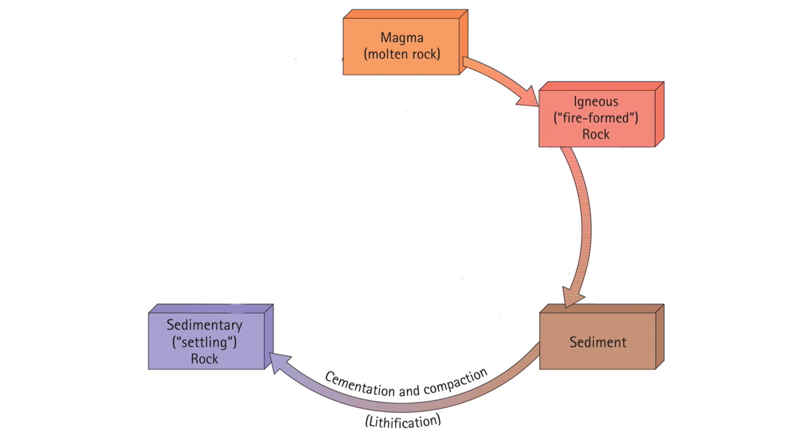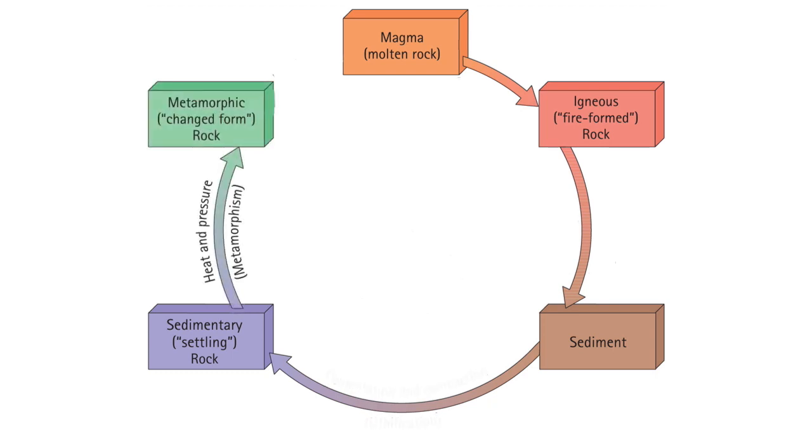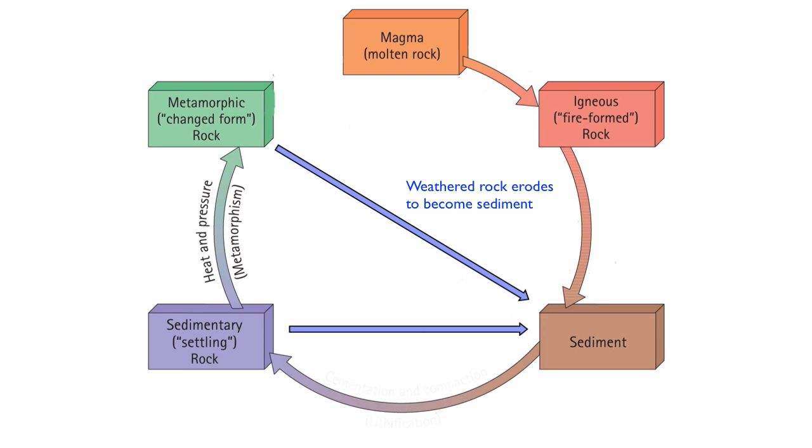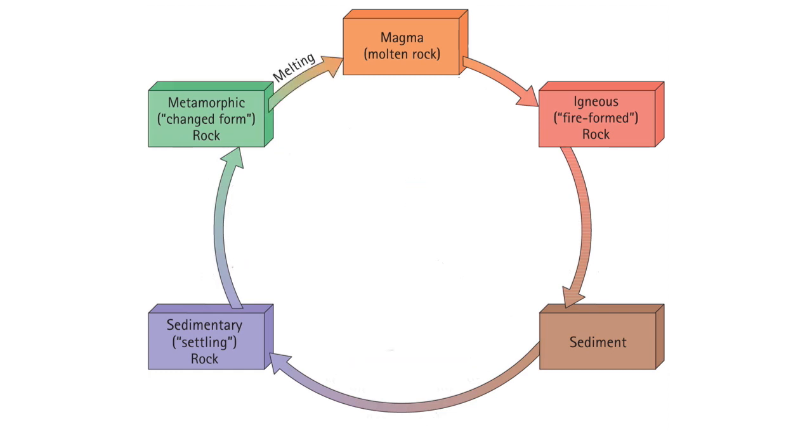When surface rocks such as igneous and sedimentary rock are subjected to increased pressure and temperature, the rock changes. Metamorphic rock is formed. This cycle can be short-circuited as well. Metamorphic and sedimentary rock at Earth's surface may decompose to become sediment that becomes new sedimentary rock, and metamorphic rock can melt, become magma, and this completes the rock cycle.